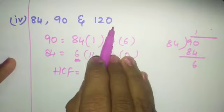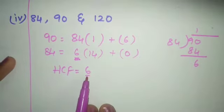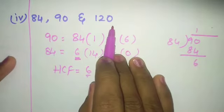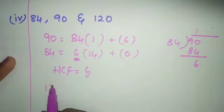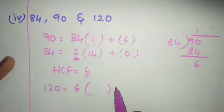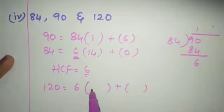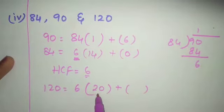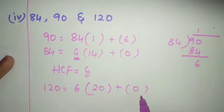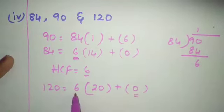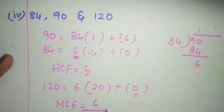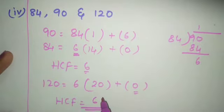But there's one more number: 120. Now divide 120 by 6: 6 × 20 is 120, remainder is 0. So HCF is 6. Therefore HCF of 84, 90, and 120 is 6, which is the highest common factor.